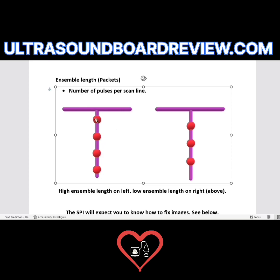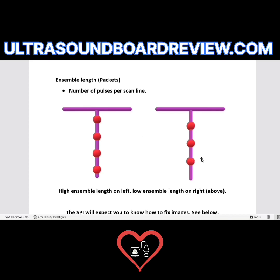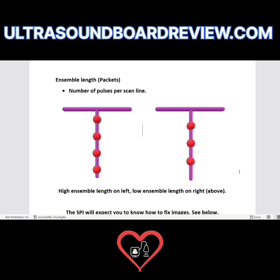The packet size on one line is 4 per line; another is 3 per scan line. This is how you get your color Doppler. Just like with 2D imaging, we have our line density.